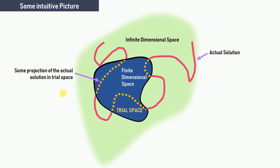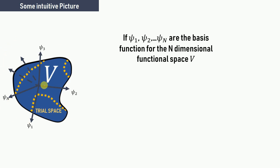As you can see, if you increase the dimension of the trial space, the area of that space increases and could cover the complete solution. This is what we want to find — the projection is the approximate solution. We want to find those c_j's that will give us this projected solution. The basis functions of the trial space V could be ψ_1, ψ_2, ..., ψ_n — these are the basis functions of this n-dimensional functional trial space V.